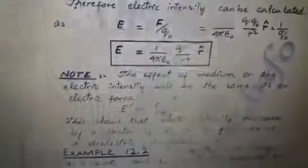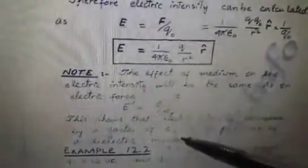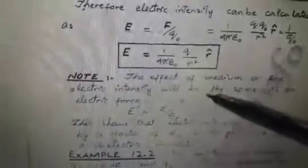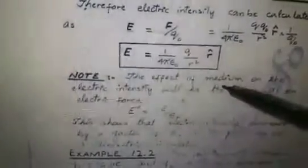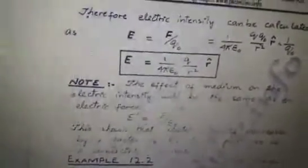We have to denote permittivity. If relative permittivity is present, the electric intensity will decrease. As shown in Coulomb's law, with relative permittivity the force decreases. Hence this topic is concluded.